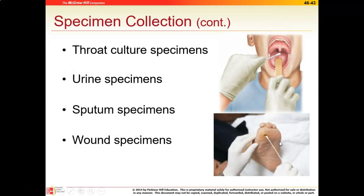Types of specimens that can be collected include throat culture specimens (we'll do rapid streps in class), urine specimens for urinary tract infections, sputum specimens for respiratory illnesses, wound specimens for cellulitis or skin infections. Additionally, cervical and vaginal specimens can be collected to check for sexually transmitted infections, and stool specimens can be done to check for organisms like Shigella and Salmonella.